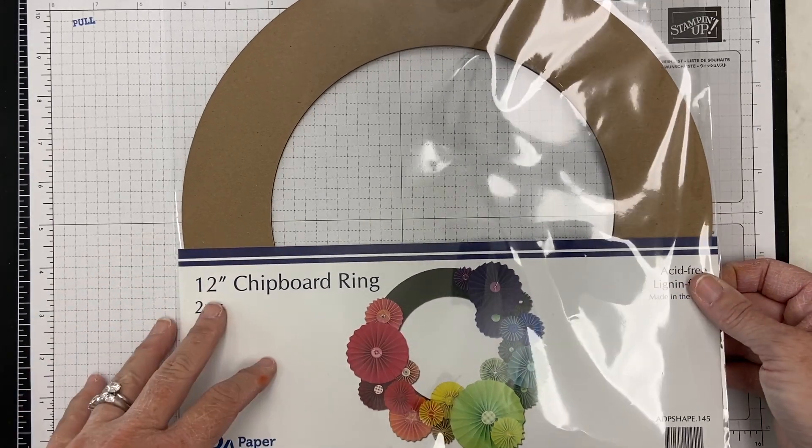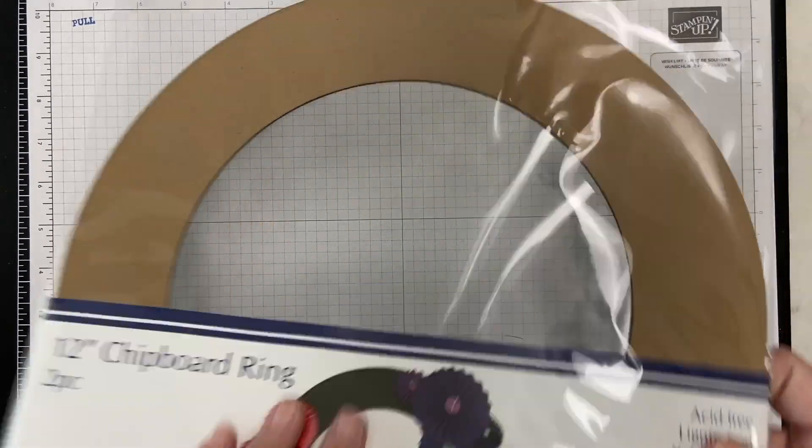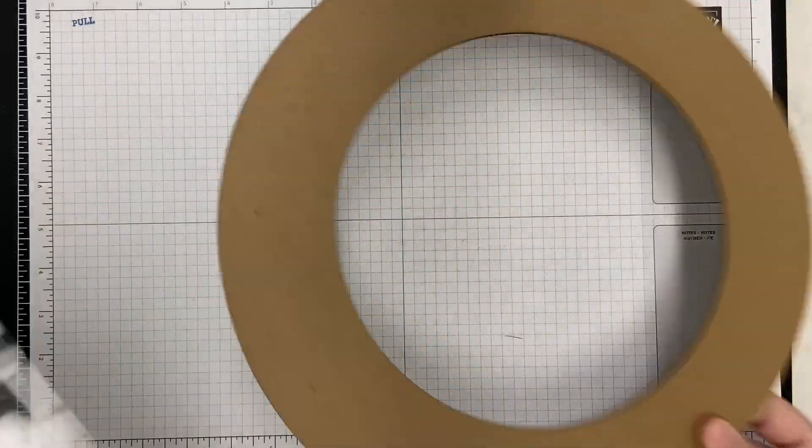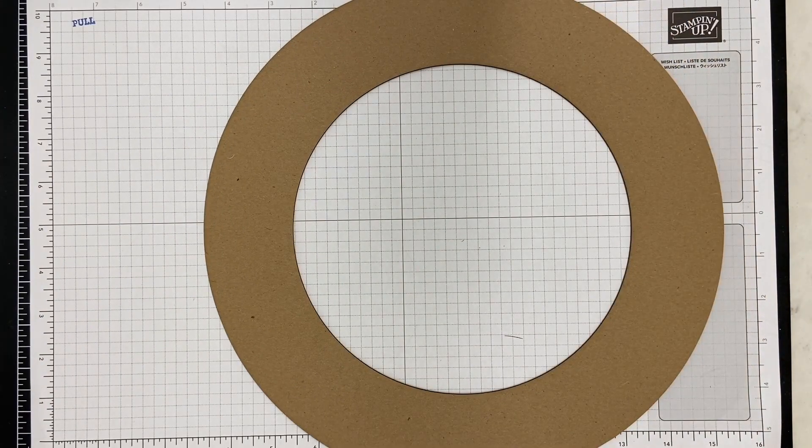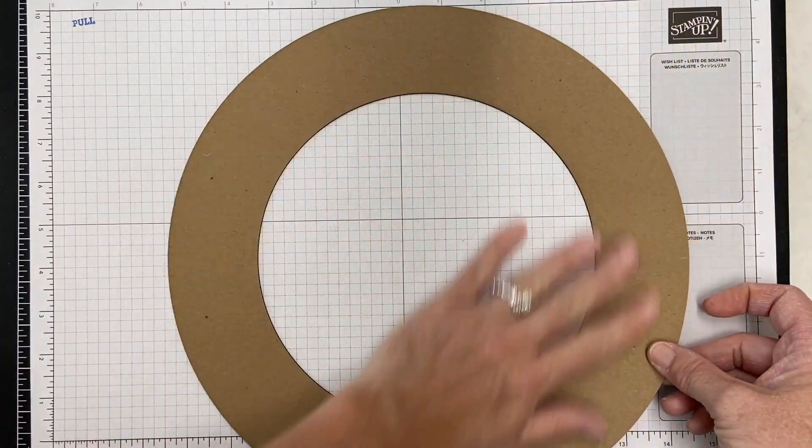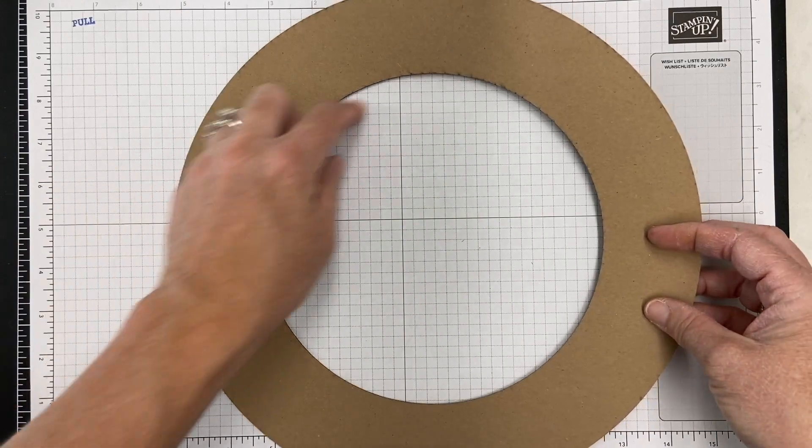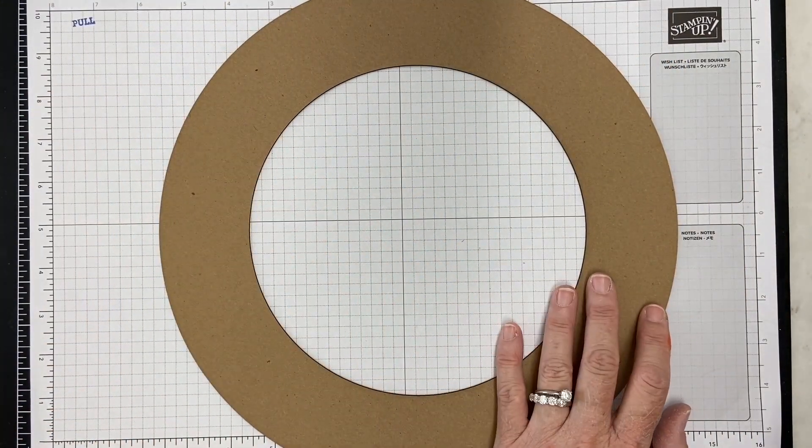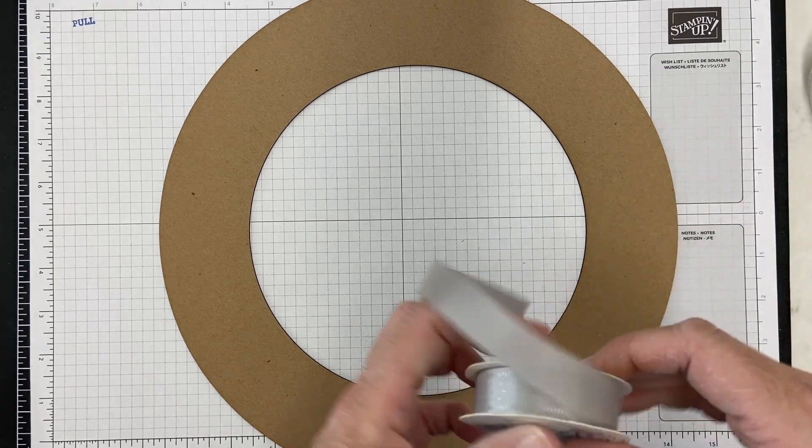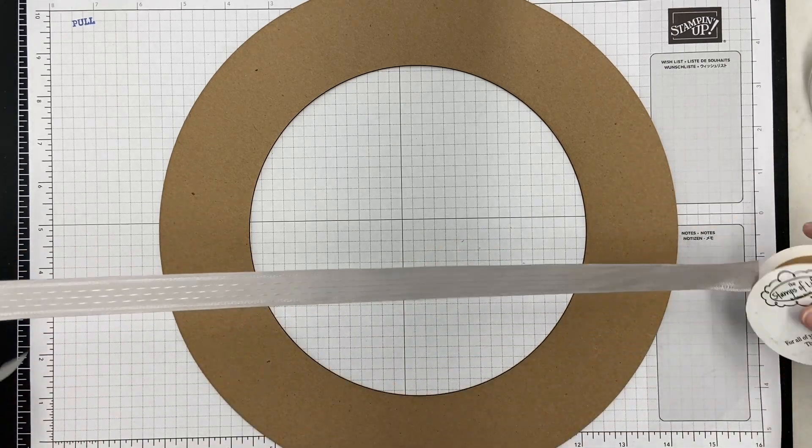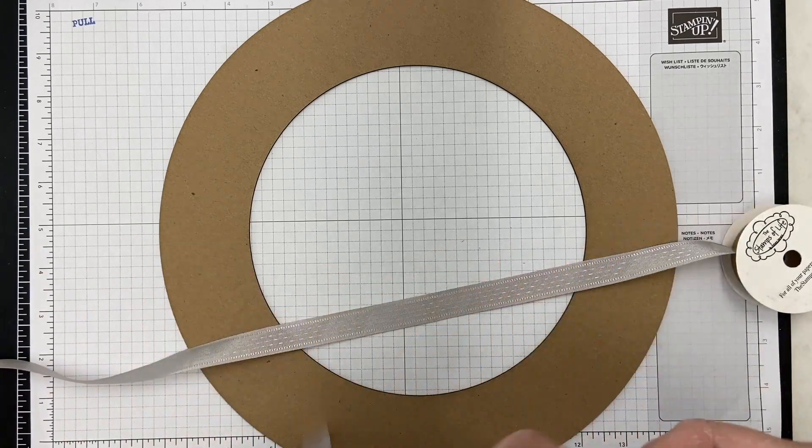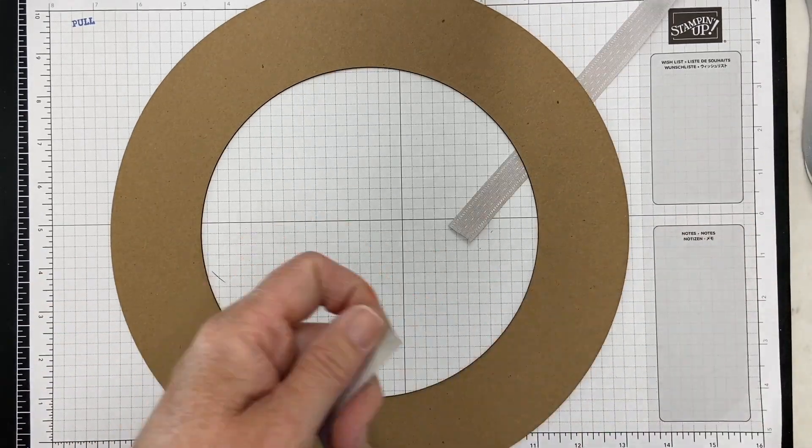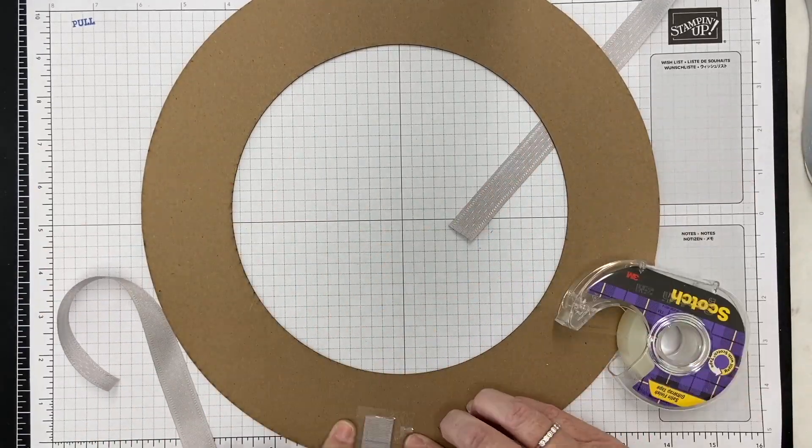I ordered a couple sets of these. Now you could make your own wreath with a cardboard box or cereal box, you just need some circles. But just for today I'm going to use this, but you could absolutely make your own smaller. I'm going to stay with the silver and gray tones that are in this paper pad. It's so elegant.